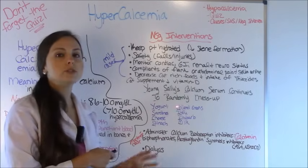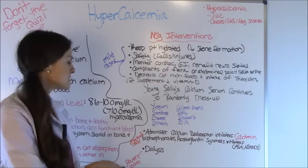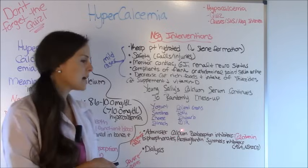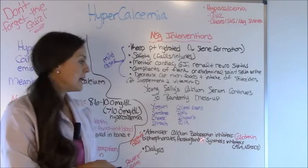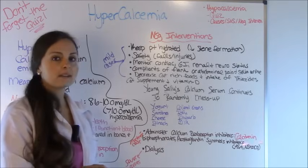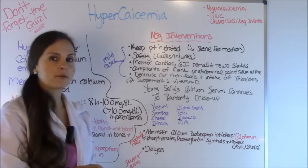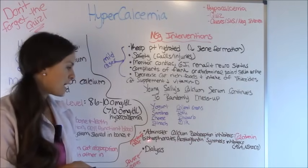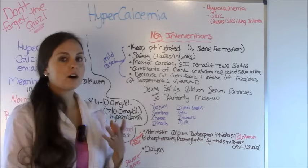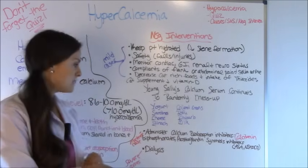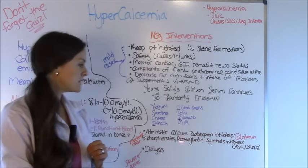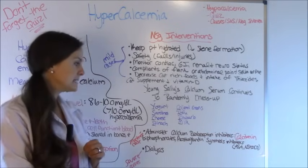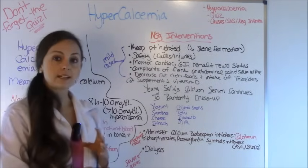These interventions are for mild cases. For a moderate case, the doctor may order a calcium reabsorption inhibitor such as calcitonin — remember that drug, as it inhibits reabsorption of calcium — and bisphosphonates. Remember, phosphorus and calcium do the opposite, so bisphosphonates may help decrease calcium levels. Prostaglandin synthesis inhibitors such as aspirin and NSAIDs can also help decrease calcium levels. In severe cases, the patient will be ordered dialysis, which can pull off the excessive calcium.